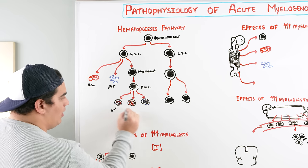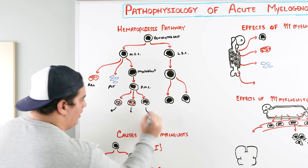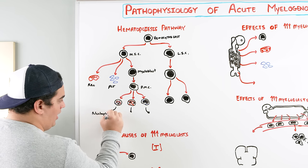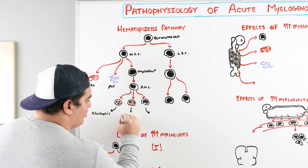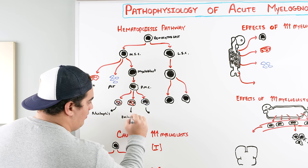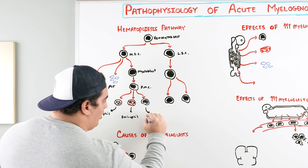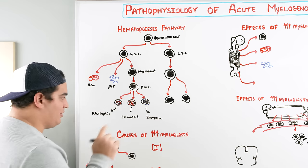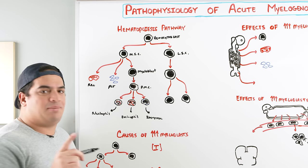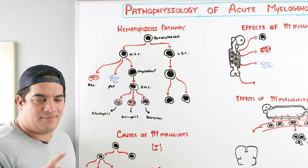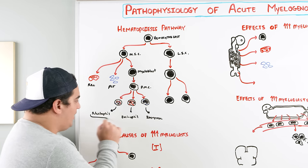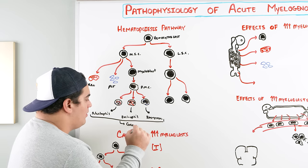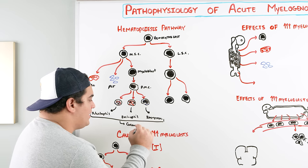The myeloblast can then become something called a promyelocyte, and then differentiate into completely fully functional granulocytes. There are three different types: the neutrophil, the eosinophil, and the basophil. These three collectively are called granulocytes.